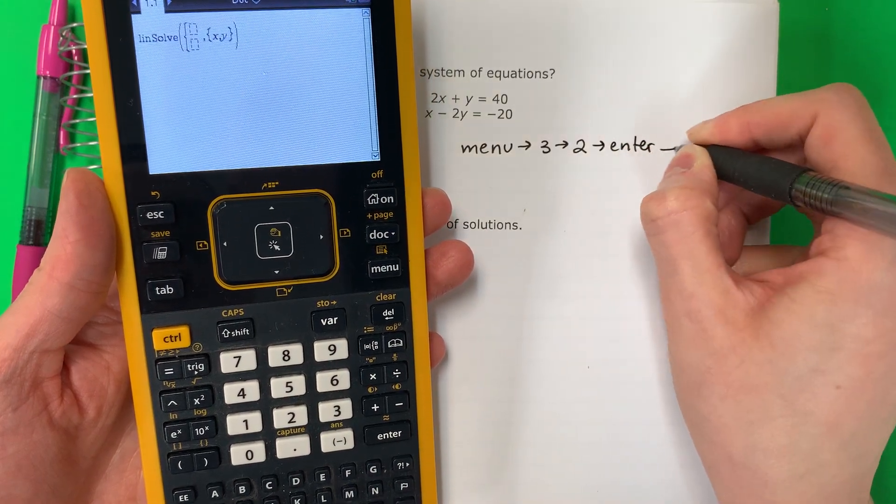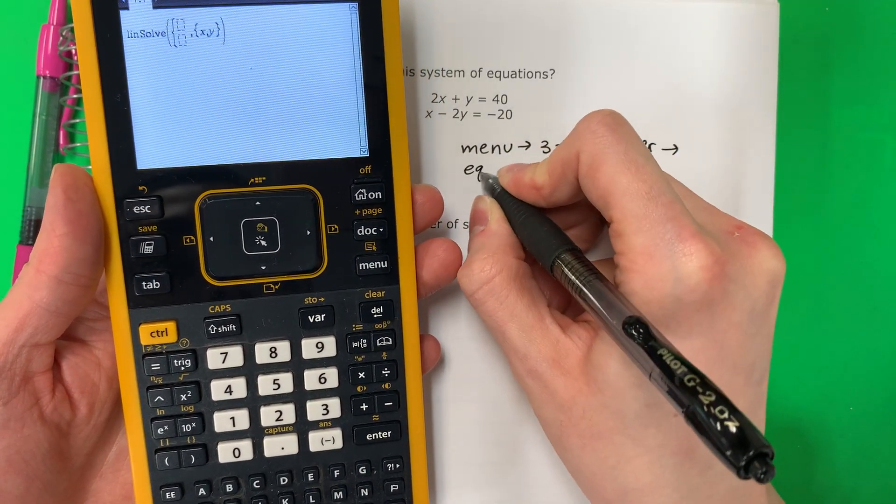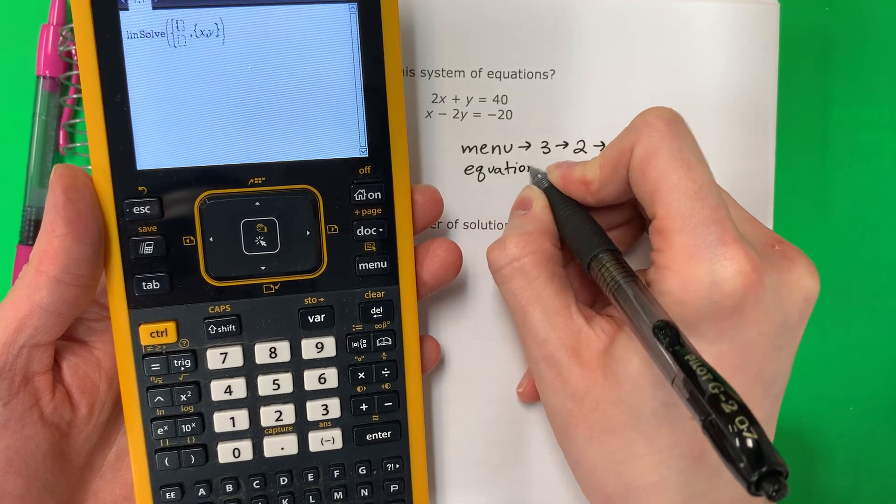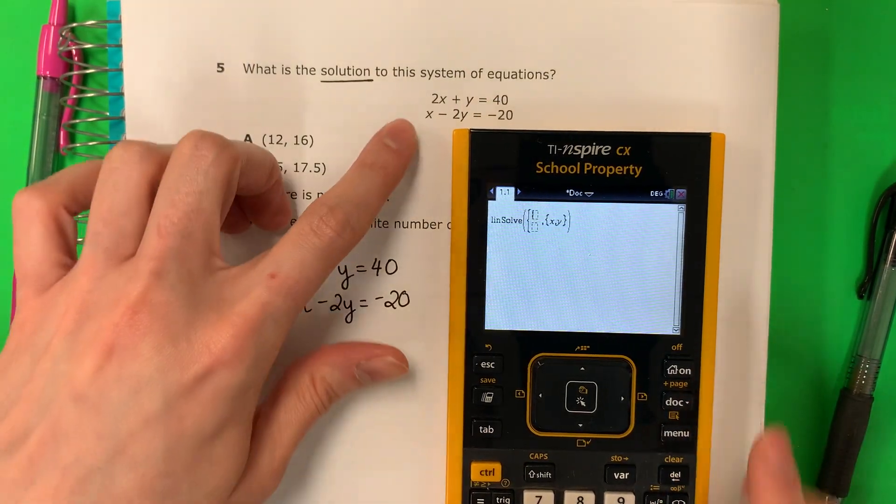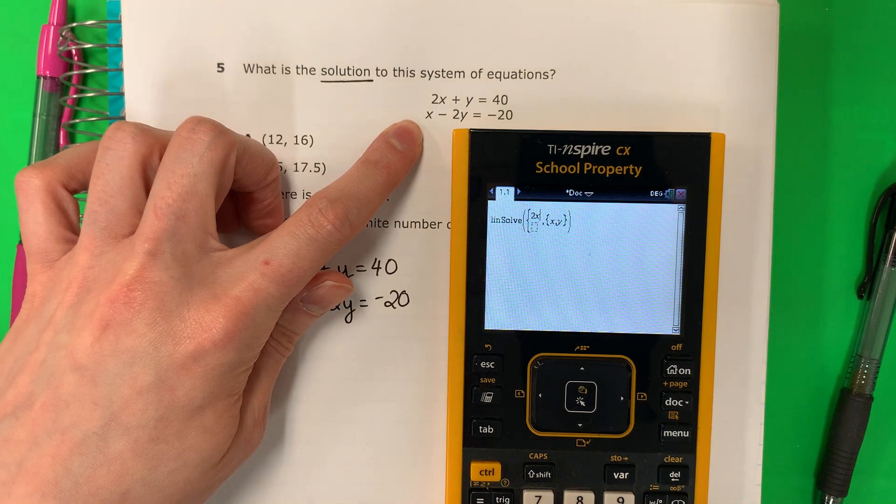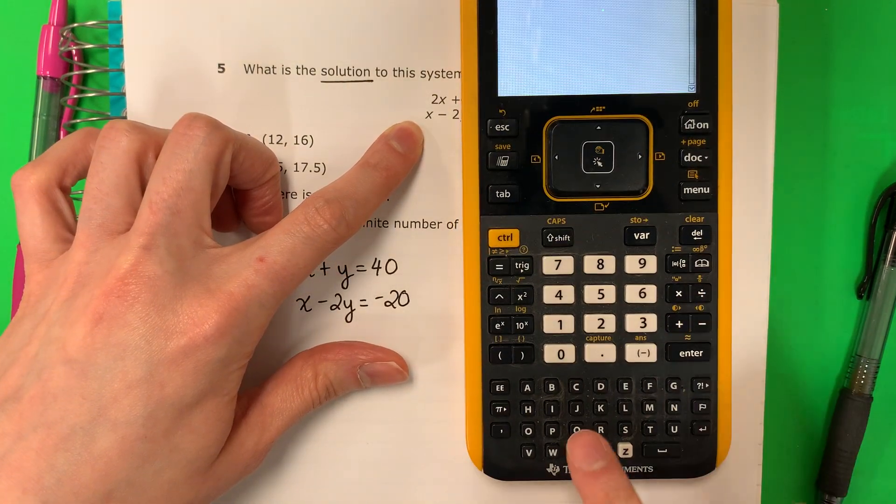And you're going to go ahead and put the equations, los ecuaciones, exactly the same, exactamente igual. So let's go ahead and do that. 2x. And remember x, this is x. No x. X.